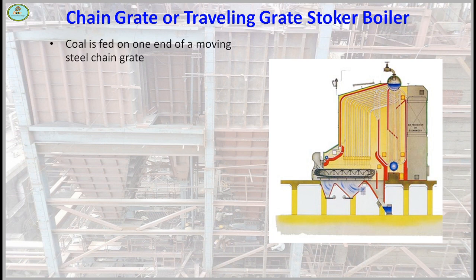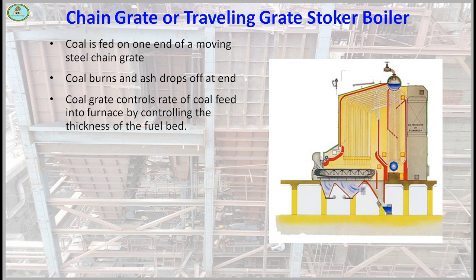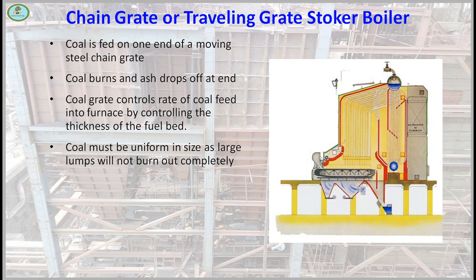Chain grate stoker boilers: steam capacity range is 3.5 to 12 tonnes per hour. In this type of boiler, coal is fed from one end of a moving steel chain grate and ash is removed at the other end. The chain controls the rate of coal feeding to the furnace and the thickness of the fuel bed. Coal must be uniform in size as large lumps will not burn out completely.